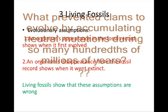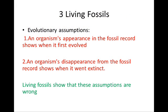Number three: living fossils. Living fossils are not simply organisms that forgot to evolve — they also prove that evolutionary assumptions are wrong. Evolutionists start with two assumptions when interpreting the geologic column: first, that an organism's appearance in the fossil record shows when it first evolved; and second, that its disappearance shows when it went extinct. Based on these assumptions, we are supposed to believe that humans and dinosaurs never coexisted. But the fact that we have living fossils proves that these two assumptions are wrong.